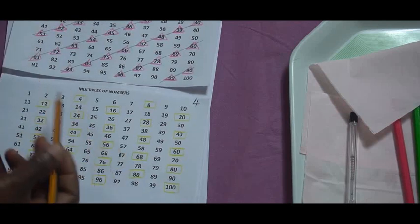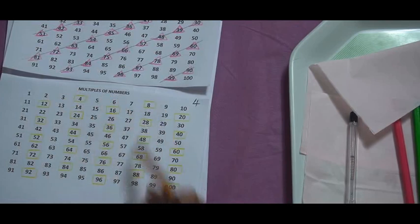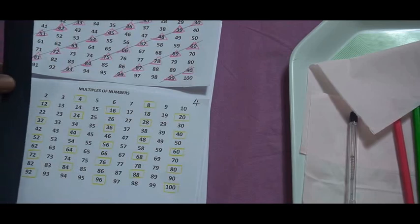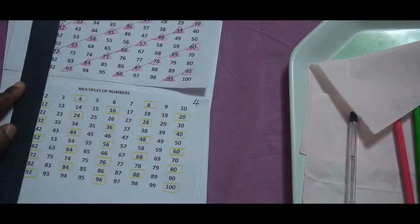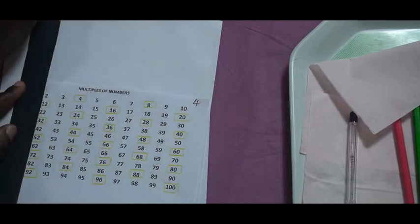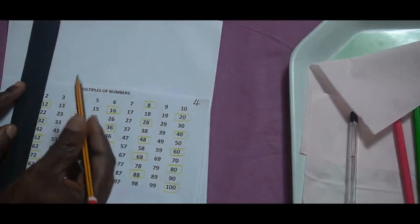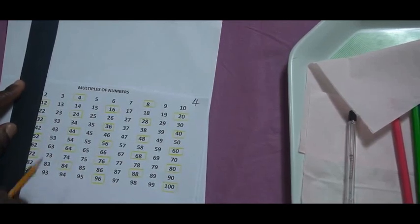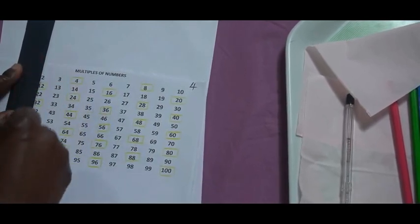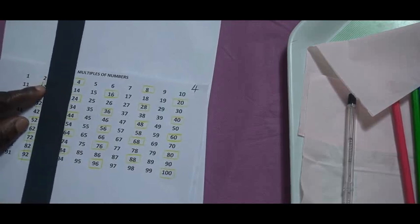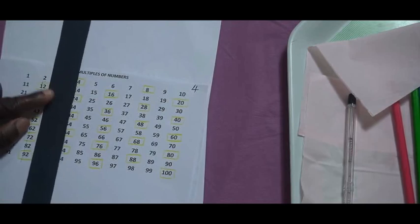The multiples here fall on vertical lines. So let's get the straight edge. And this side: 12, 32, 52, 72, 92, line. 4, 24, 44, 64, 84, another line.